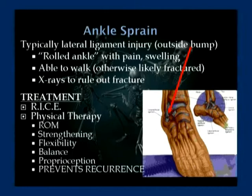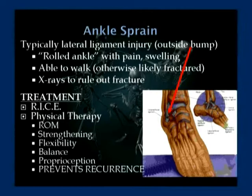Ankle sprains are very common, typically affecting the outside or lateral side of the ankle. Most patients describe rolling the ankle. If you can walk on the ankle, it's probably just a sprain; if you can't weight-bear, you may need x-rays to rule out a fracture. The treatment is RICE — rest, ice, compression, elevation. We stress the importance of physical therapy with ankle sprains. It seems like a benign injury, but many patients will continue to sprain their ankle without the appropriate therapy. Sending every ankle sprain patient to a physical therapist has been proven to decrease the chance of future recurrence.